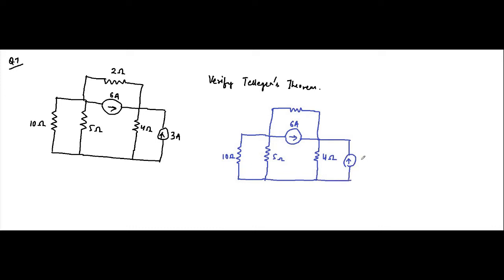Now let us assign the current directions to these resistor branches. This is i1, this is i2, this is i3, and this is i4. There are two nodes, so we assign two node voltages: this node is v1, this node is v2, and this is ground.